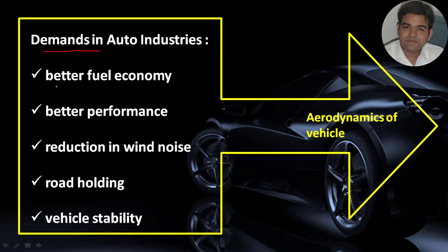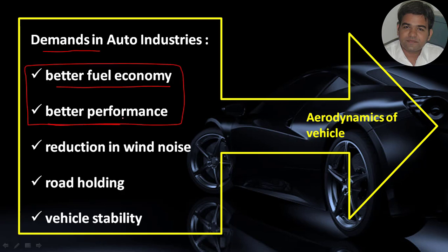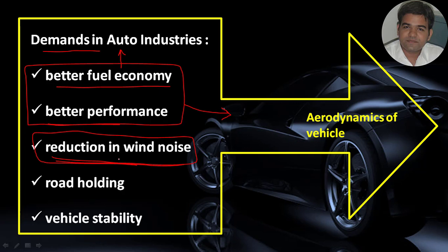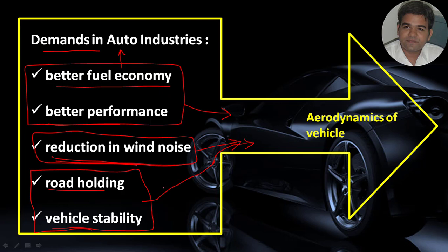The demands in the auto industries are better fuel economy and better performance — these two are the demands created by consumers to automotive manufacturers, and these can be observed in all segments of vehicles. Considering the comfort of occupants, consumers always demand reduction in wind noise. Road holding and vehicle stability are two parameters focused on considering the safety of occupants, and these are always demanded across all vehicle segments.